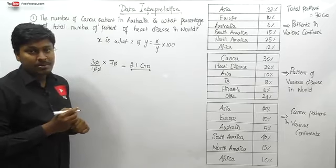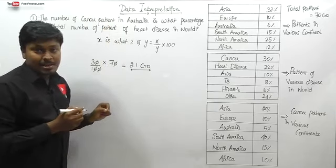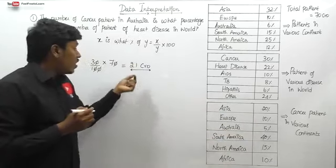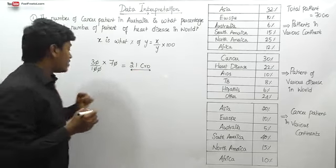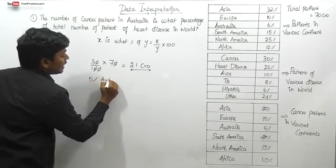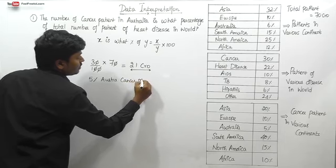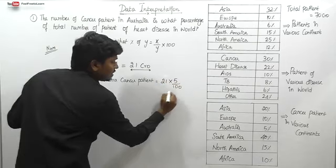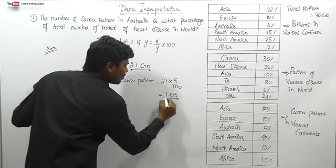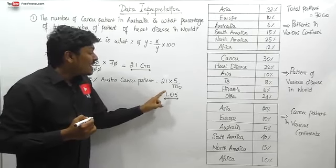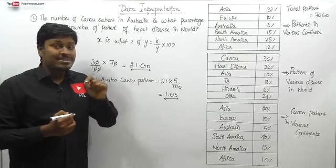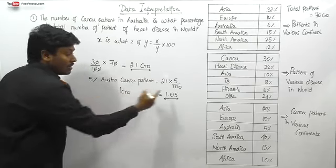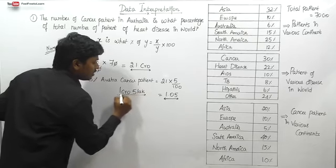Our target is to find only cancer patients in Australia. From the third chart — cancer patients in various continents — Australia is 5%. So out of 21 crore, we find 5%: 21 into 5 divided by 100 equals 1.05. Since all values are in crores, 1.05 crore can be written as 1 crore 5 lakh. So cancer patients in Australia are 1 crore 5 lakh.